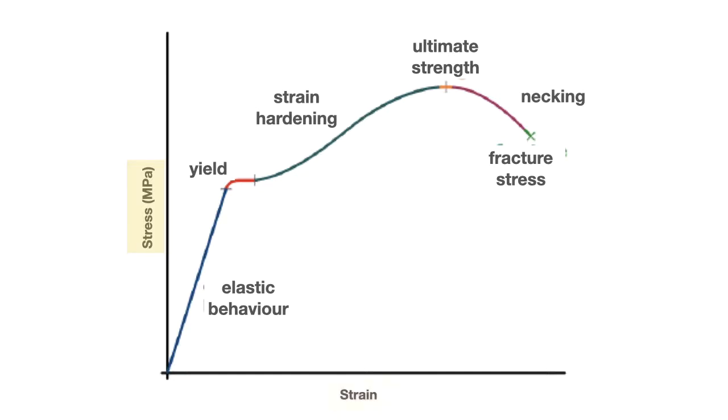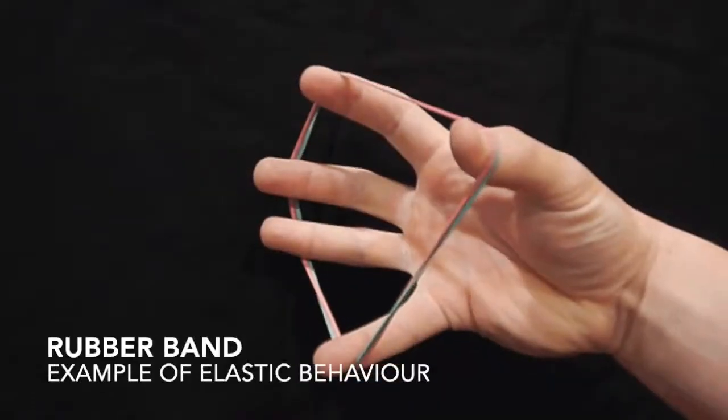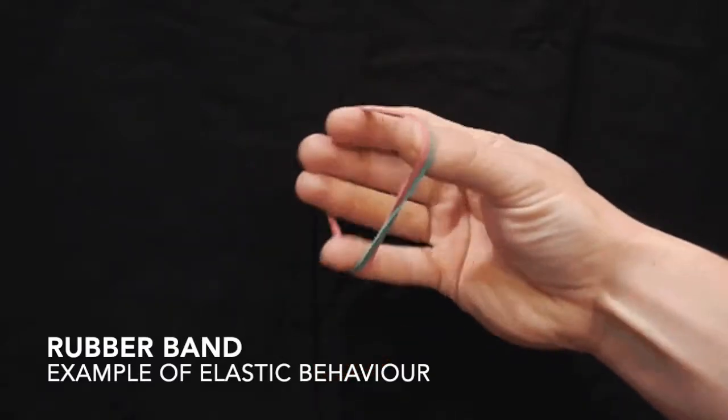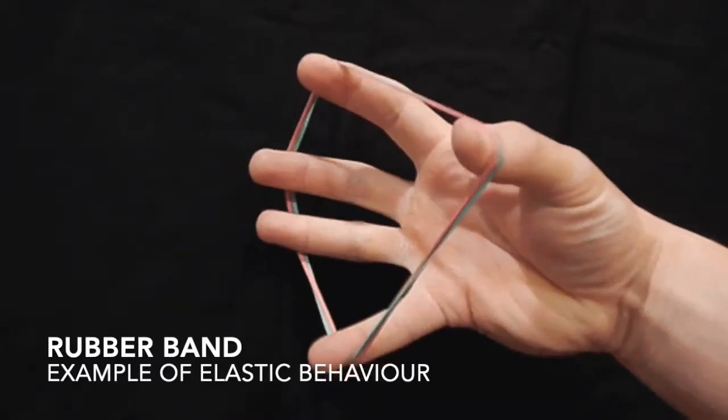At a certain point of displacement, the material would show an elastic behavior. The elastic behavior is illustrated in a straight line. Within this region, it will return to its original state if you remove the loading. So that is an example of an elastic behavior.